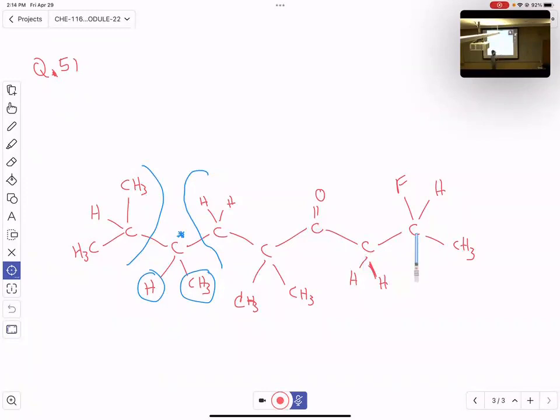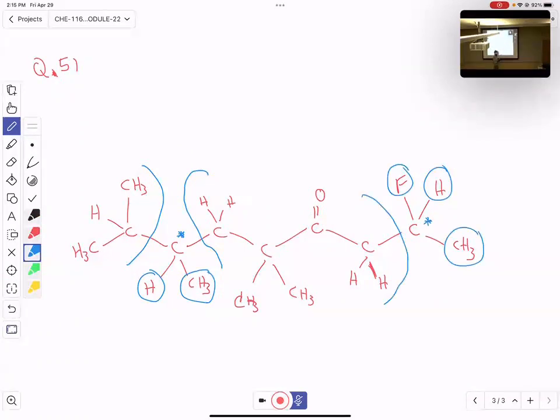And then here's our last chiral carbon. I've got a fluorine, I've got hydrogen, I've got a methyl group, and I've got the rest of that chain. So that makes this carbon chiral as well, because all four of those things are different.